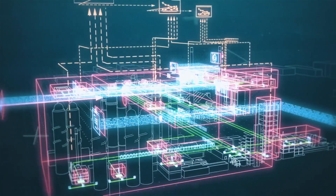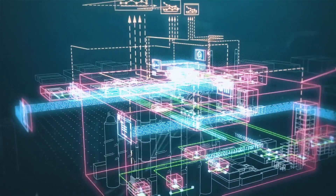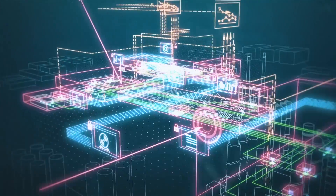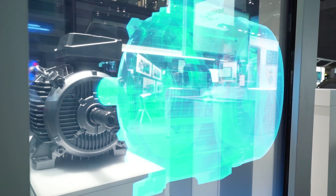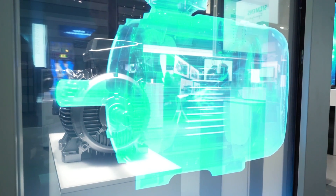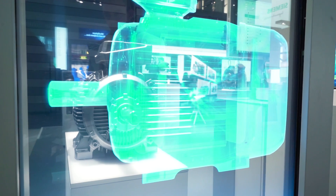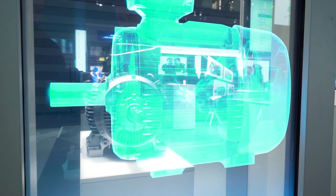Digital enterprises are, among others, characterized by a strong horizontal and vertical data integration. Digital twins are also often used to represent physical objects. In order to protect your productivity and know-how in a digital enterprise, industrial security is indispensable.